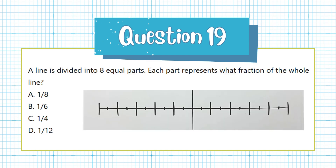Question 19. A line is divided into 8 equal parts. Each part represents what fraction of the whole line? a. 1/8, b. 1/6, c. 1/4, d. 1/12.